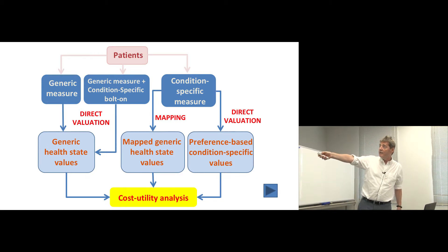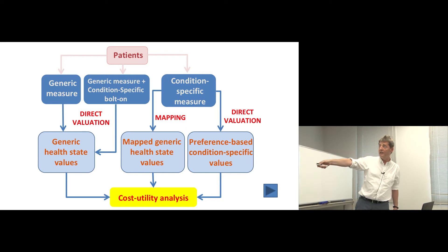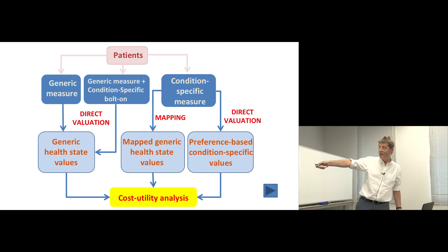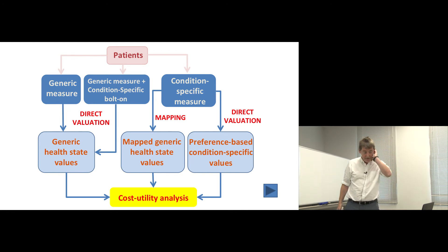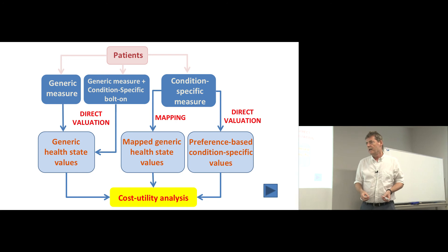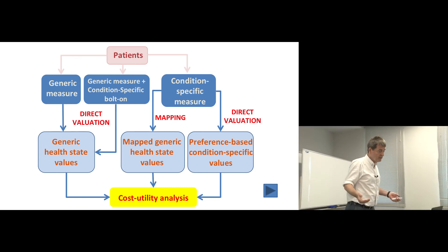The alternative pathway is condition-specific measures. Starting with condition-specific measures, we have two options: map them to a generic health state such as the EQ5D, or directly value them using approaches like time trade-off. Either way, we end up with preference-based condition-specific values — condition-specific QALYs rather than generic QALYs. These are the measures of health outcome that feed into our cost-utility analysis or economic evaluation.